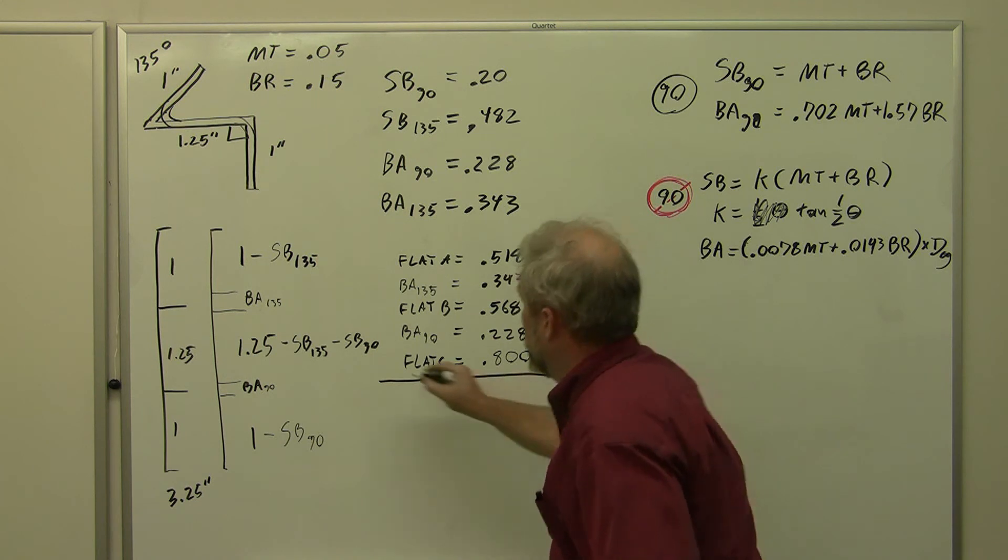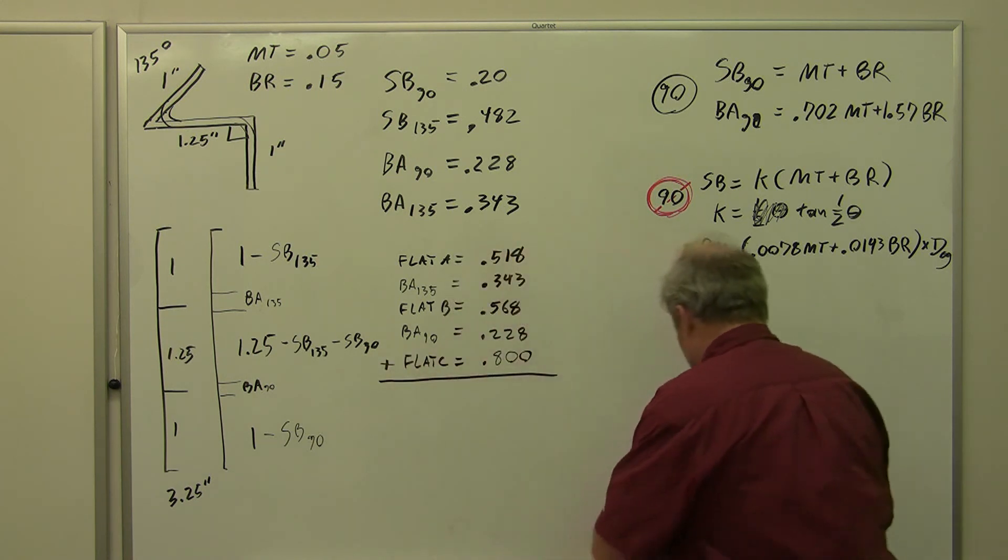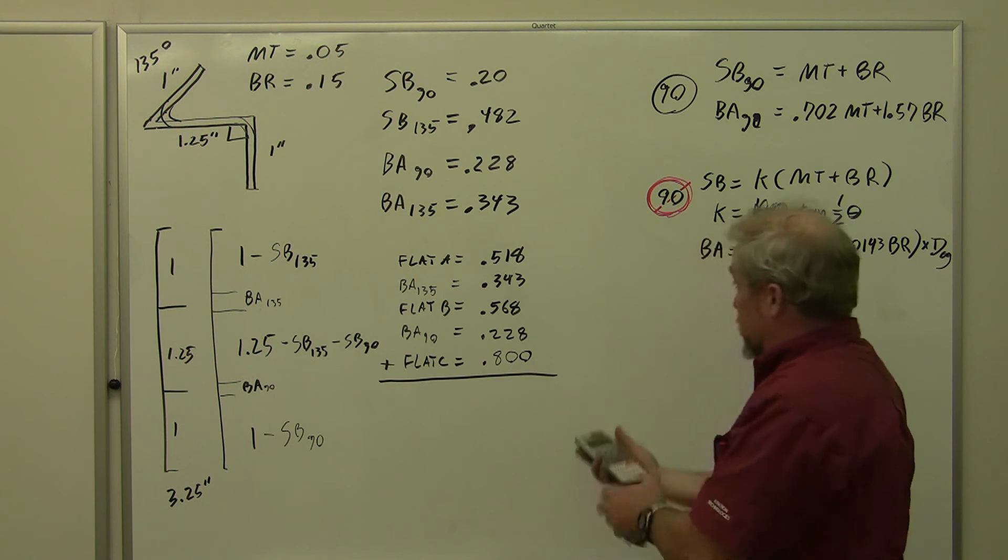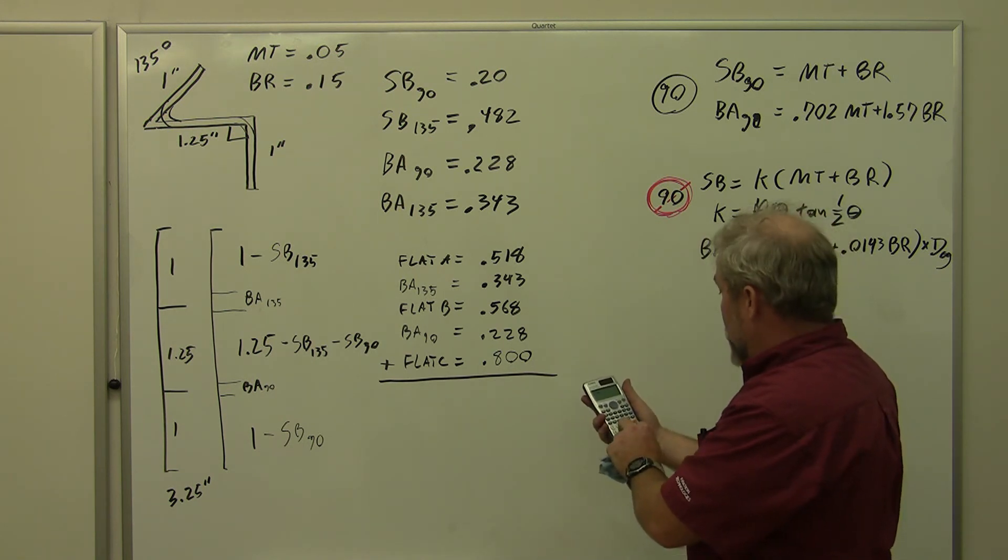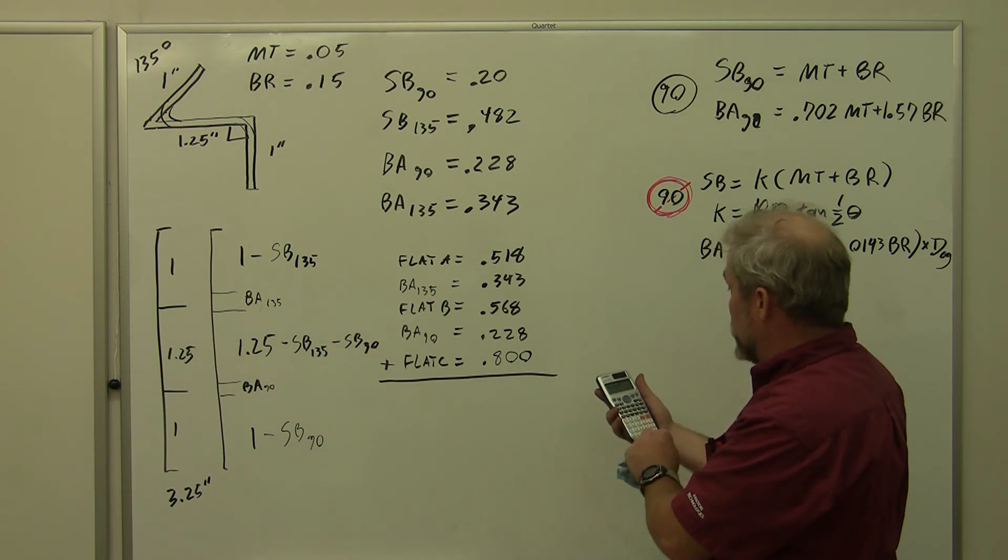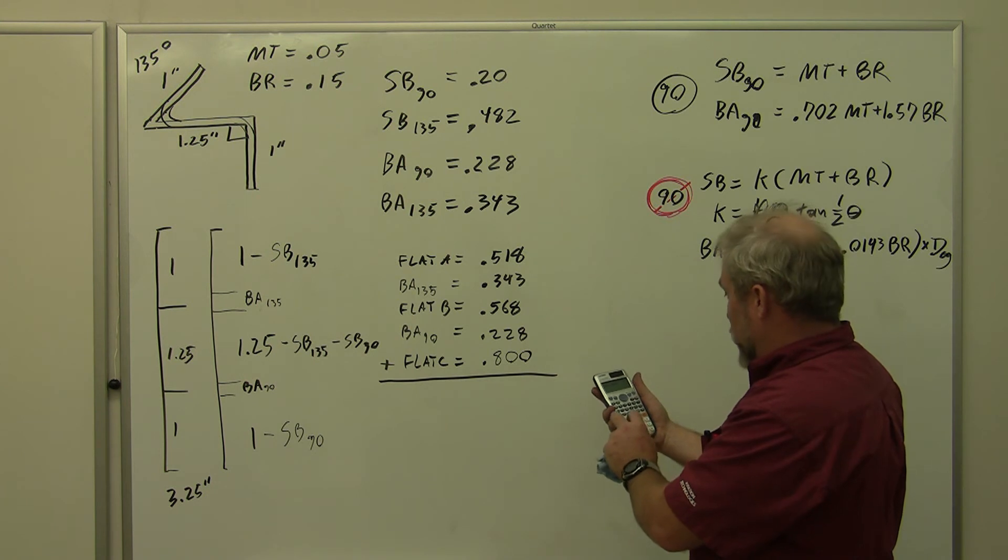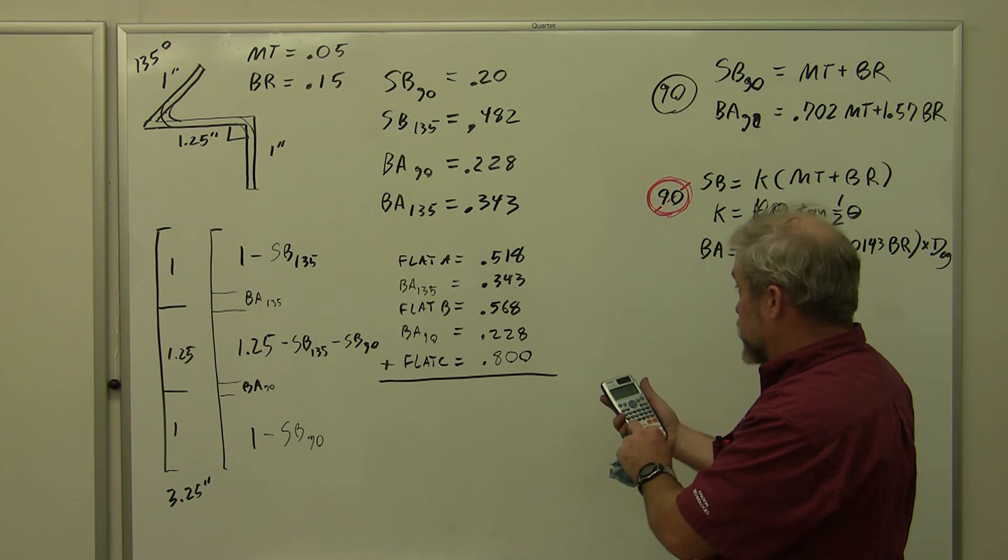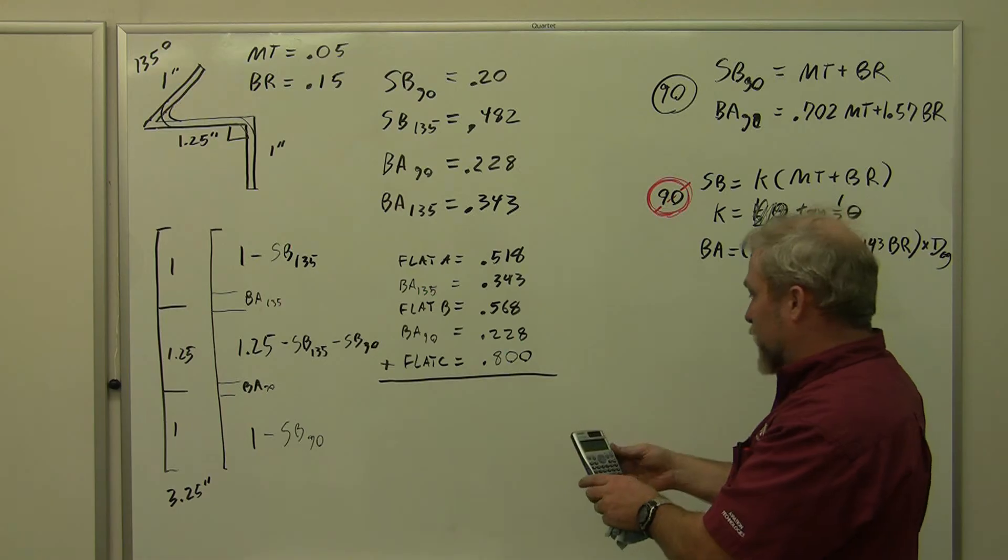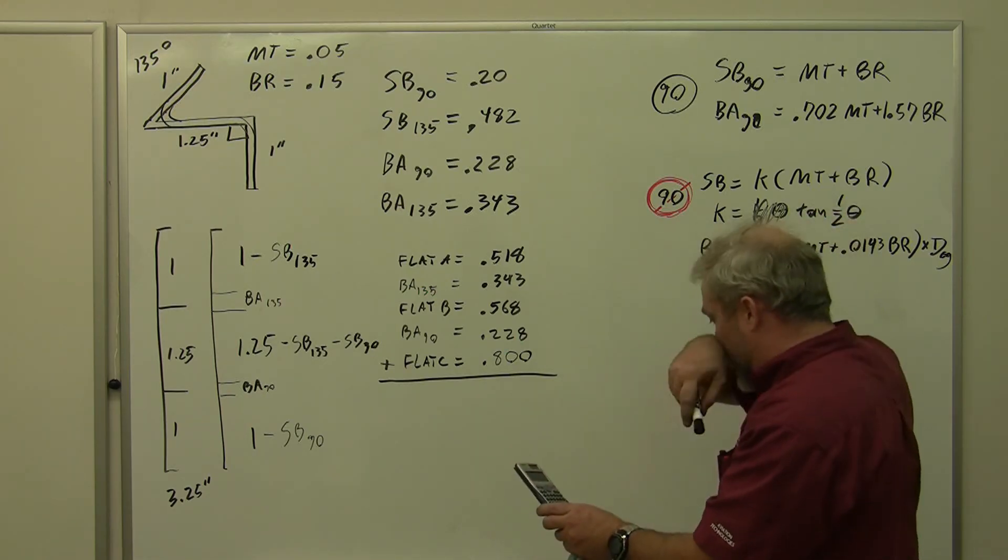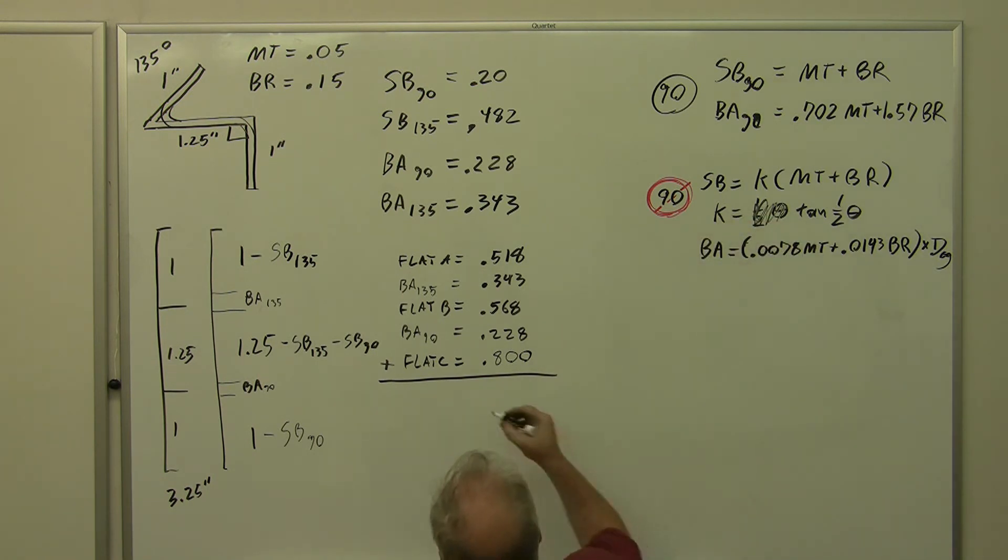Now, adding all of those together, my handy-dandy calculator, I say my handy-dandy calculator but I'm lying to you, this belongs to Mohamed who's kindly operating the camera for us. 0.518 plus 0.343 plus 0.568 plus 0.228 plus 0.800 equals drum roll, 2.457.